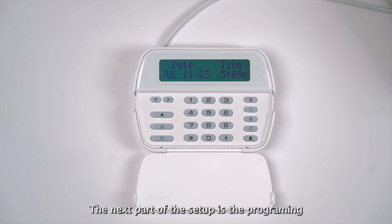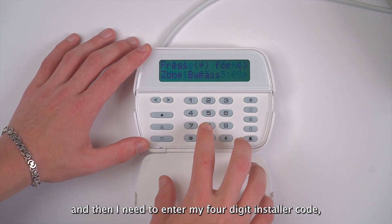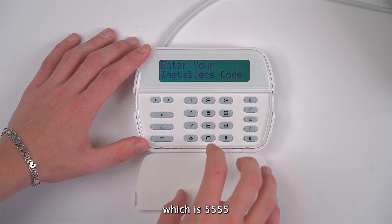The next part of the setup is the programming of the alarm system for communication, and for contact ID reporting specifically. In order to go into programming of the system, I need to press star 8 and then I need to enter my four-digit installer code, which is 5555.